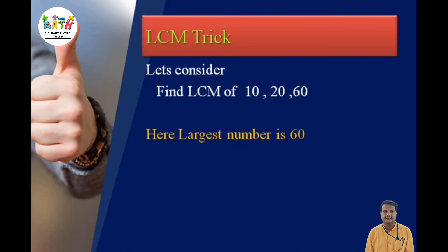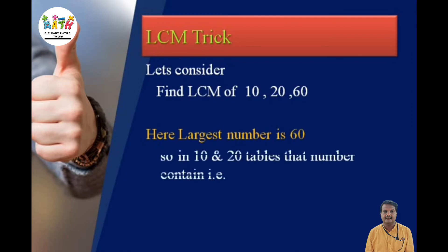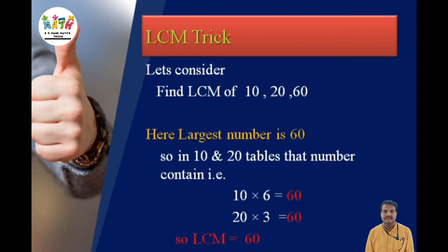Here the largest number is 60. We check whether 10 and 20 appear in the multiplication table of 60. We see that 10 multiplied by 6 equals 60, and 20 multiplied by 3 equals 60. Since both smaller numbers divide into 60, the LCM is equal to 60.